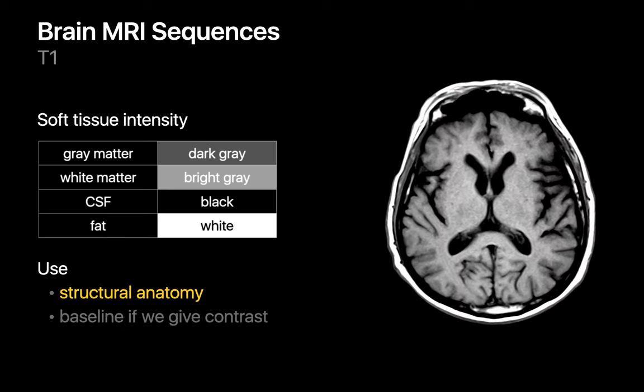The first of these is T1-weighted imaging. On T1-weighted images, CSF appears black and fat appears white. Brain matter appears gray, with normal gray matter appearing darker than normal white matter, kind of like how you'd expect if you were directly looking at brain tissue with your own eyes. We generally use T1-weighted imaging to assess structural anatomy. Unenhanced T1-weighted images also serve as the baseline we compare contrast-enhanced MR images against so that we can tell what enhances and what doesn't.